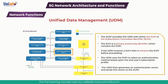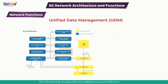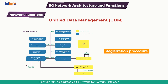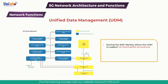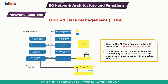The UDM then generates an authentication vector and sends this vector to the AUSF. The UDM interacts with the AMF during the registration procedure. The UDM stores or uses a UDR to store the AMF identity for the UE which is completing the registration procedure. Storing the AMF identity allows the UDM to support UE reachability procedures. The UDM provides the AMF with access and mobility subscription data and also subscription data to support the selection of an SMF.